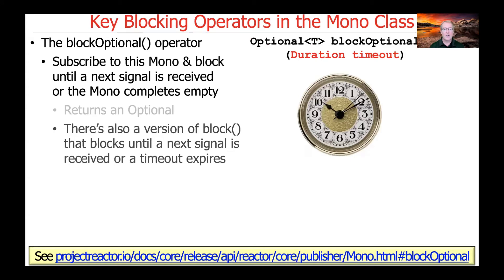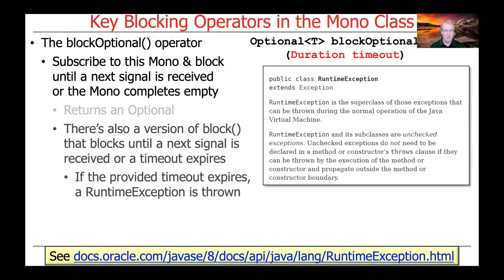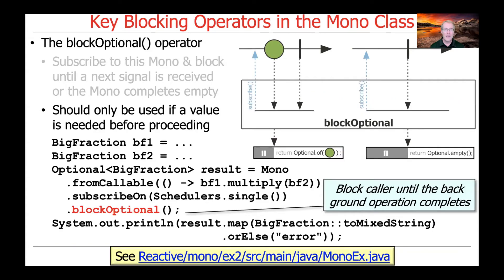As with block, there's also a version of blockOptional that will block until the next signal is received or a timeout expires. If the provided timeout does indeed expire, then a runtime exception will be thrown. Like block, blockOptional should really only be used if you absolutely need a value before proceeding. We try to minimize the use of blocking in reactive code because it impedes the inherent parallelism in the system and makes things less reactive and responsive.